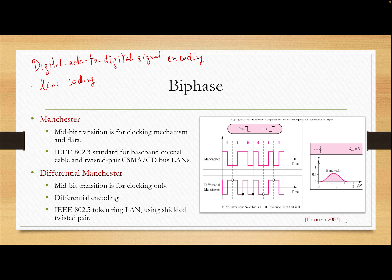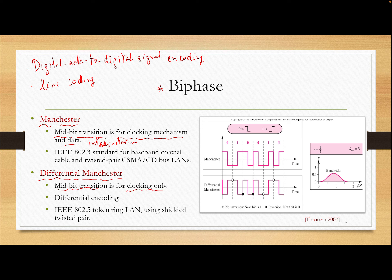We talked about NRZ-I, NRZ-L, and bipolar AMI already. Today we'll talk about biphase. There are two types of biphase: one is called Manchester and another is called Differential Manchester. Both of them have mid-bit transition, meaning there is a transition in the middle of every bit. For Manchester, this mid-bit transition is for the clocking mechanism — for synchronization — and also for data interpretation: whether the bit is a zero or a one. For Differential Manchester, the mid-bit transition is for clocking only.